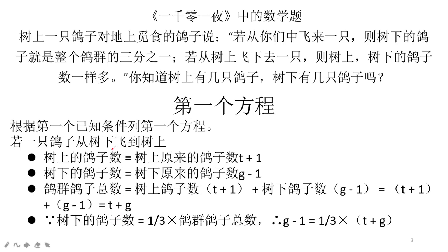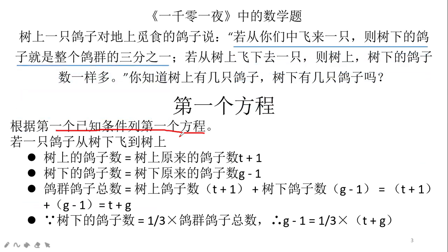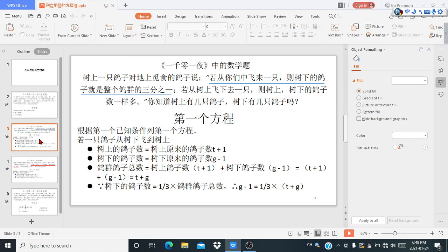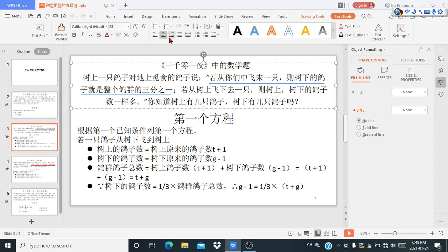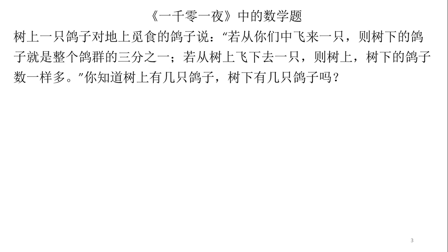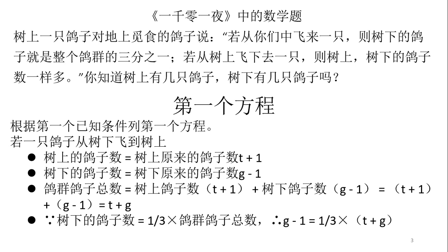首先我们来列这道题目的第一个方程，就根据题目的第一个已知条件来列第一个方程。画蓝色的这个刚才的已知条件，就是这个题目的第一个已知条件。